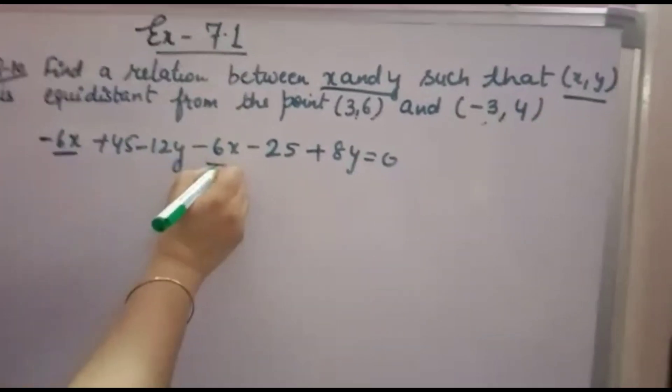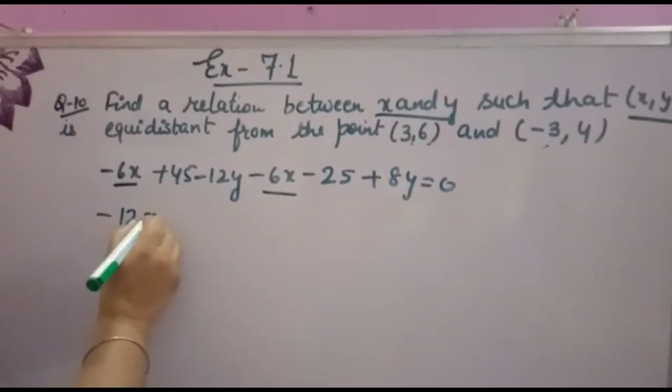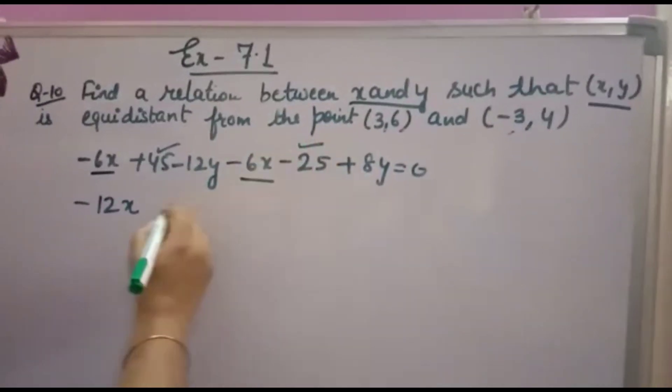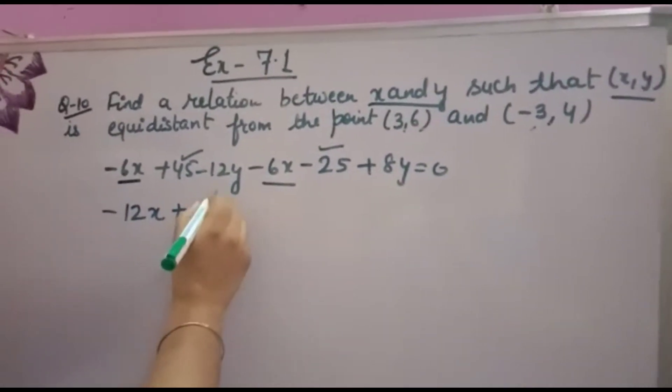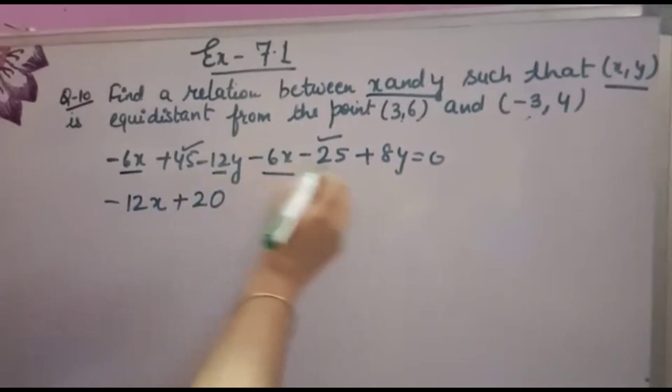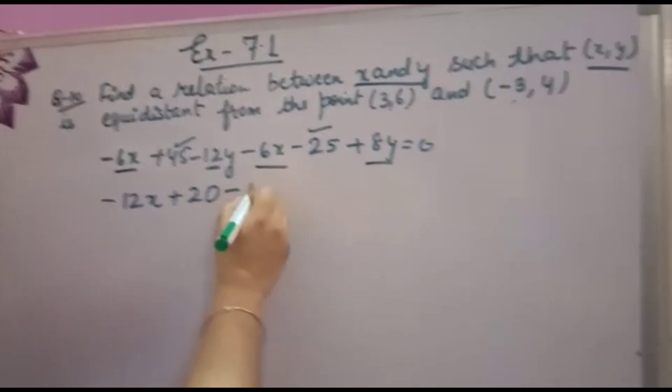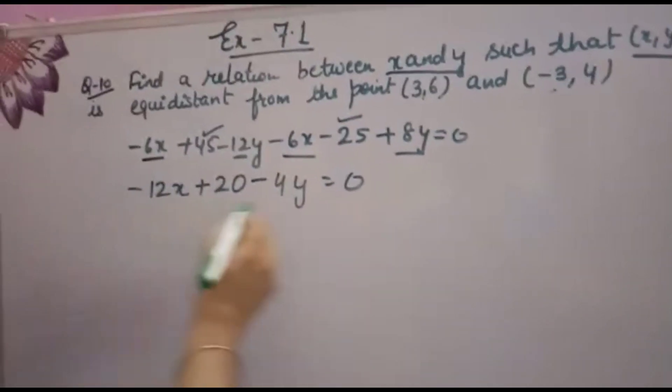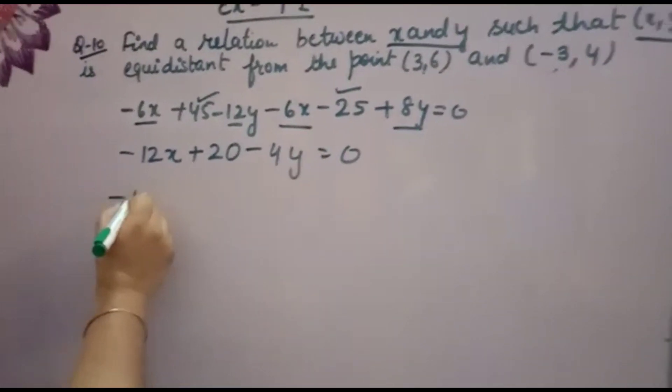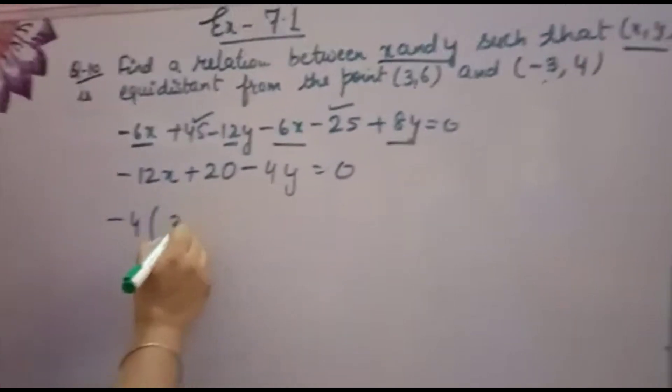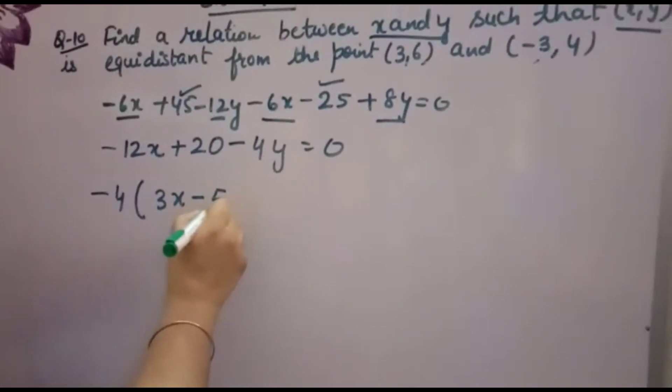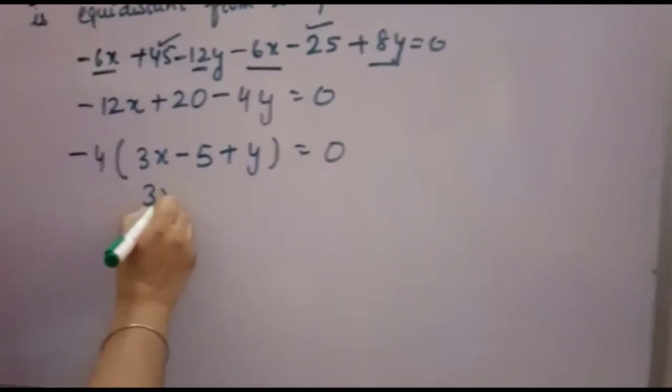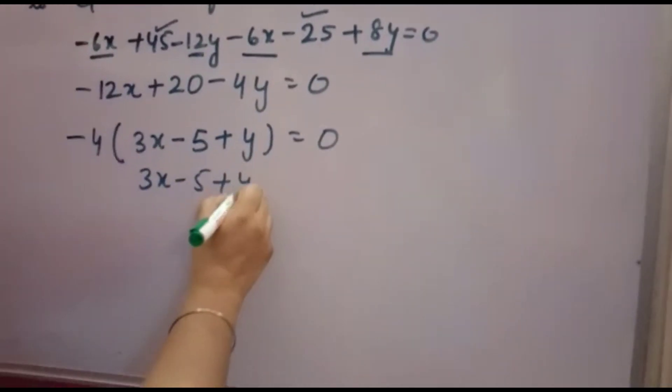Now minus 6 minus 6 is minus 12X, 45 minus 25 is 20, minus 12Y and 8Y is minus 4Y equals 0. Now you see all are coming in 4 tables, so you can take minus 4 common. You will get here 3X minus 5 plus Y equals 0.